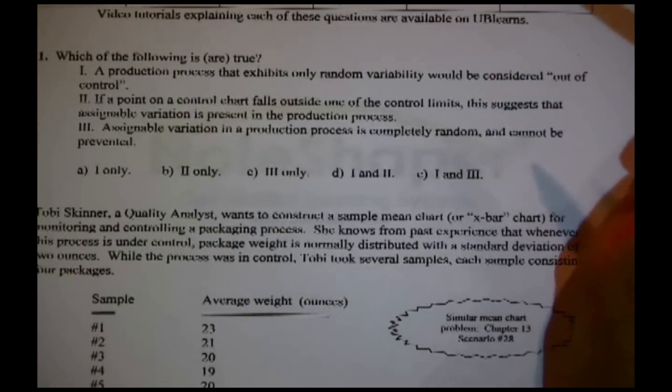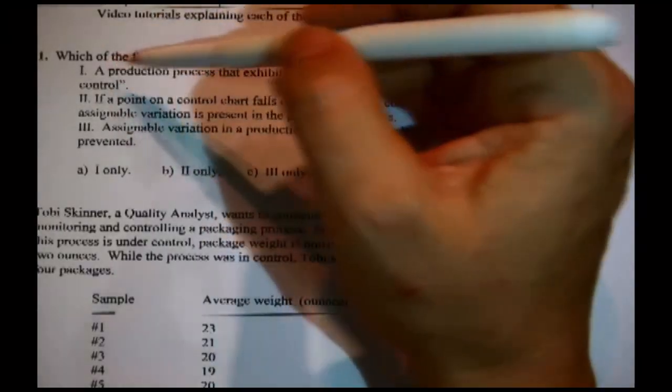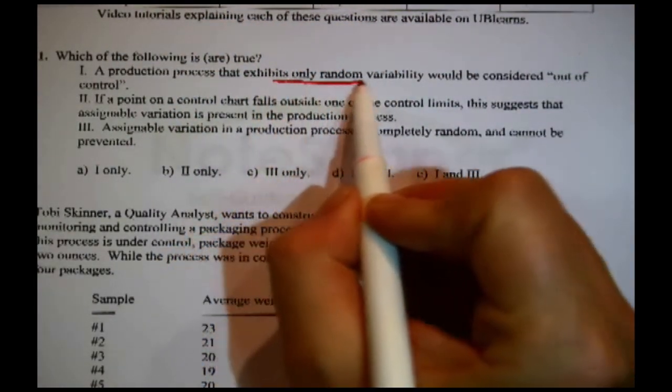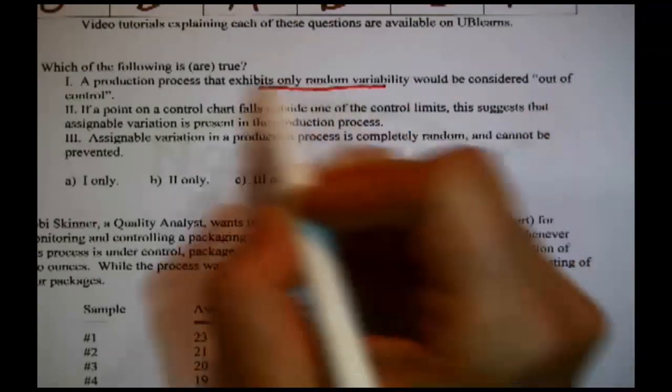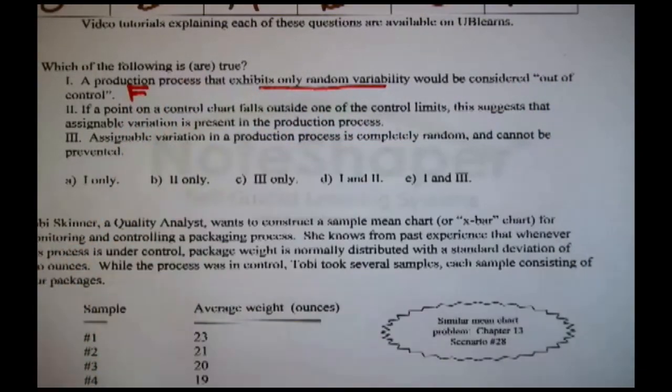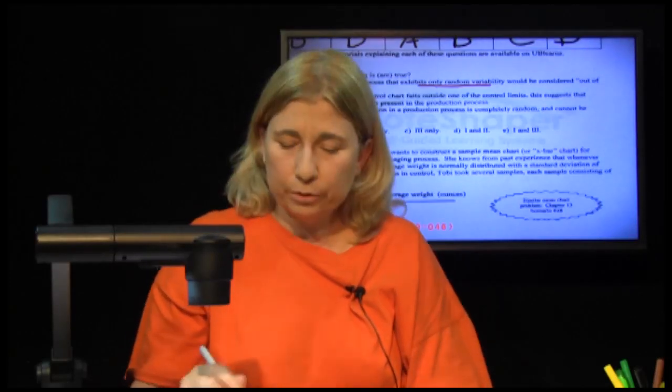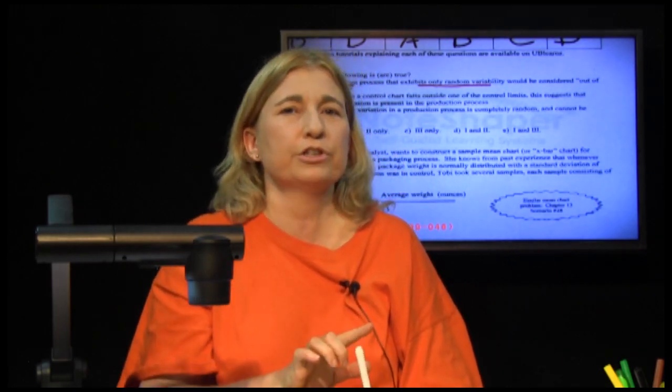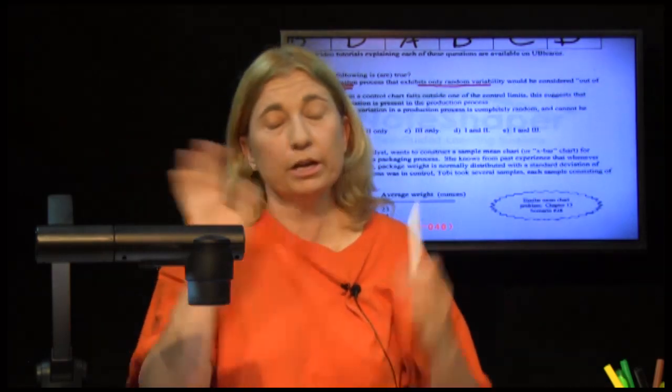Which of the following is or are true? One at a time. A production process that exhibits only random variability would be considered out of control. That is false. If you wanted to correct it, a production process that exhibits only random variability is considered in control. A production process that exhibits assignable variation is considered out of control. The top statement is false.